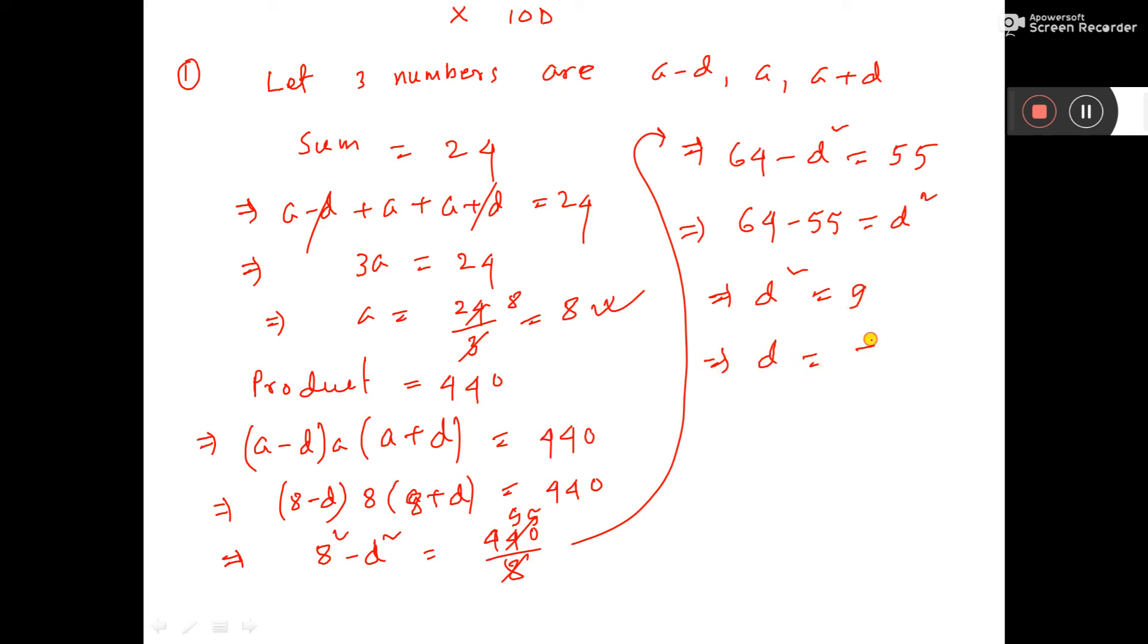That means D equals plus or minus 3. So the 3 numbers: If D equals 3, then the numbers are A minus D, that is 8 minus 3 equals 5, then A equals 8, and 8 plus 3 equals 11. So 5, 8, 11.